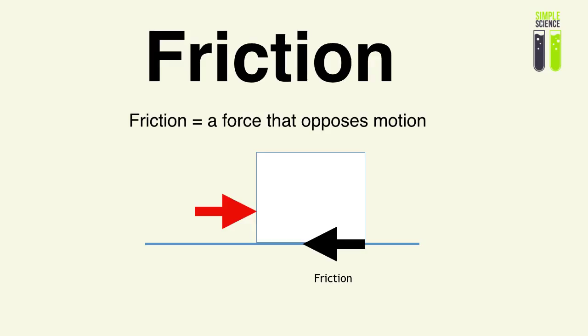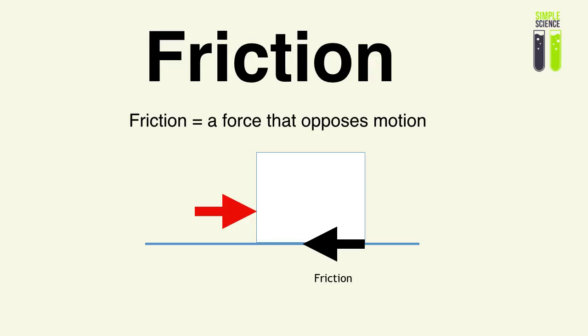You're trying to push something to the right, but it's stationary because friction is opposing your push. Now, what is friction exactly? Friction is basically the electrostatic interactions between the atoms of the box and the atoms of the ground. As you know, one of the four types of forces in the known universe, friction is actually an electrostatic force — the interactions between the atoms of the box and the atoms of the ground, at the interacting surface where they meet.